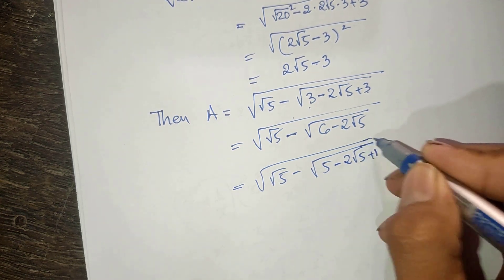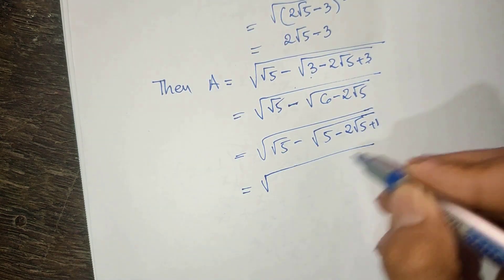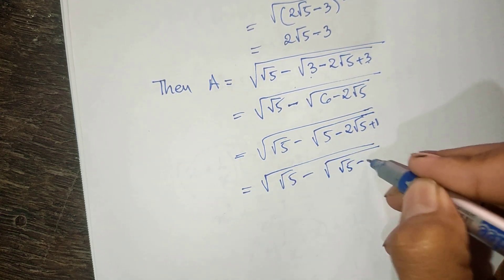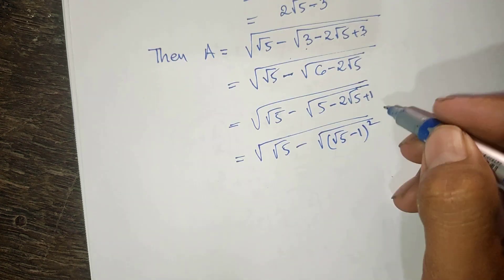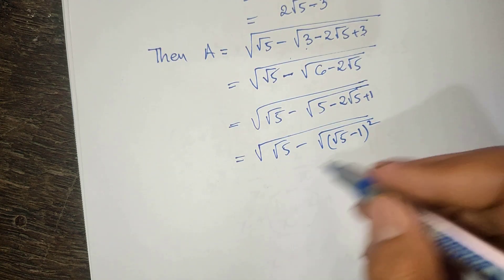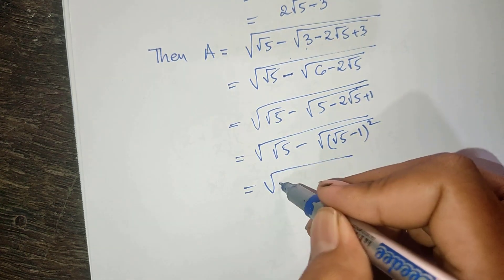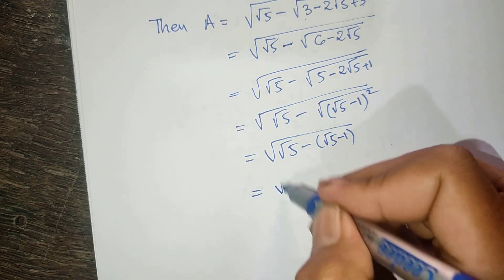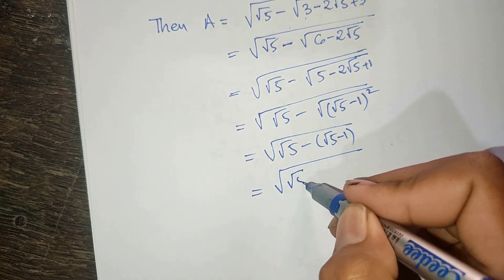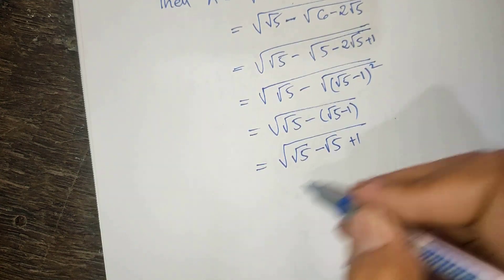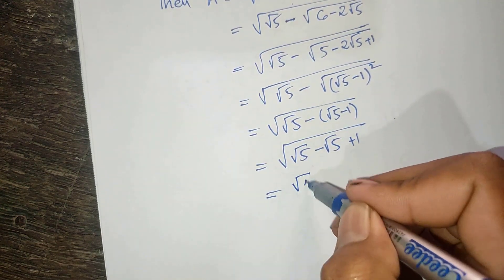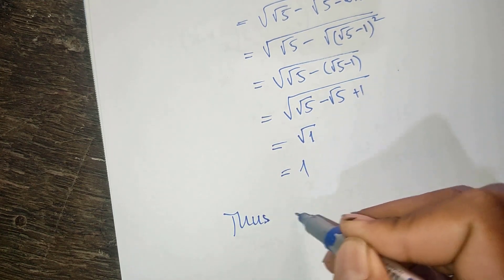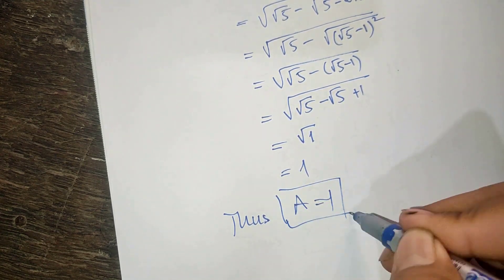This equals square root of 5 minus square root of 5 minus 1, which we can write as square root of square root of 5 minus square root of 5 plus 1. That simplifies to square root of 1, which equals 1. Thus A equals 1 is our solution.